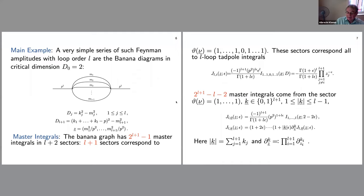The majority of master integrals come from sectors where all propagators are present, with different multiplicities. One has k in the lattice {0,1}^(l+1) according to the Heaviside function, and the absolute value of k — which is the sum — is less than l plus one. One master integral is specified by k=0, and the others essentially contain derivatives of this master integral, where k is bounded accordingly.